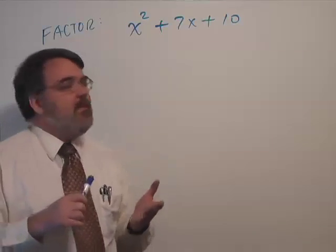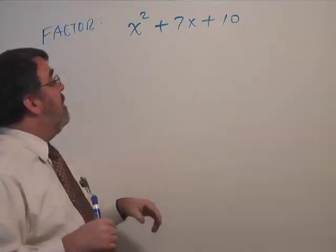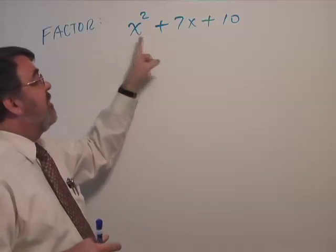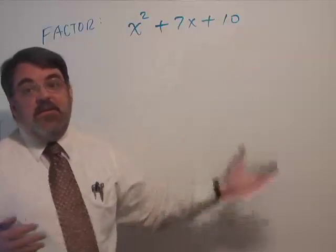A coefficient is a number which multiplies the variable part. So we have 1x squared, 1 is a coefficient, 7x, 7 is a coefficient, and 10, 10 is a coefficient.